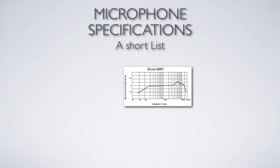In the real world, that rarely happens — we're going to have some deviation because transducers are not perfect. What we see on the curve here is not a flat line. This is a dynamic microphone made by Shure — it's a workhorse in the industry — the Shure SM57, dynamic moving coil. We're going to talk about what that means in a few minutes.